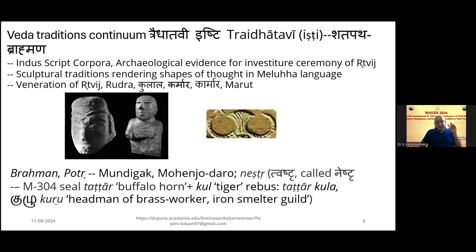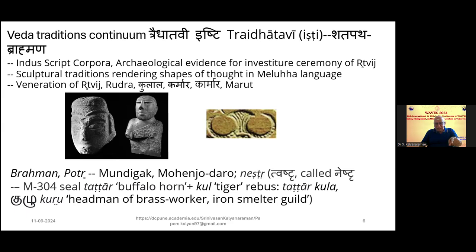We can now take a look at the Mohenjo-daro priest and also another priest found as a figurine in Mundigak, in a neighboring civilization area following the same cultural structure. In one case he is wearing a fillet with a round bead on the forehead, and also on the right hand he is wearing a trefoil. We read all these pictures and graphemes to signify meanings related to the life activities of the people of the civilization.